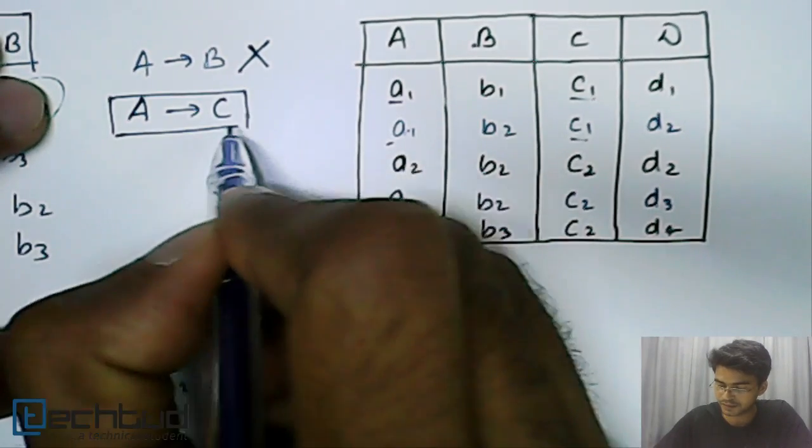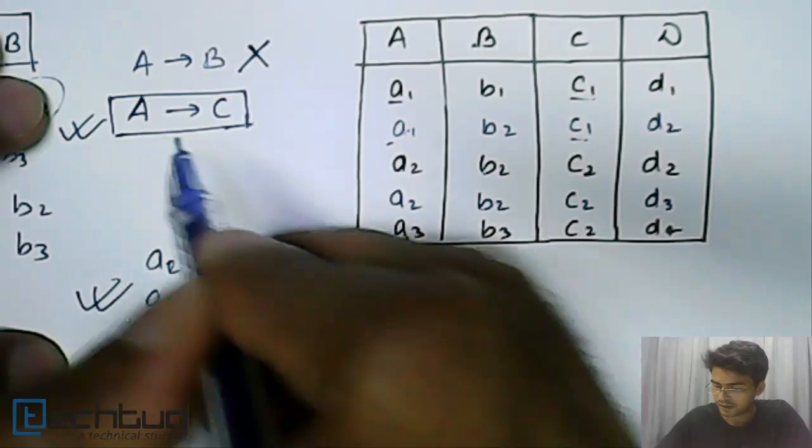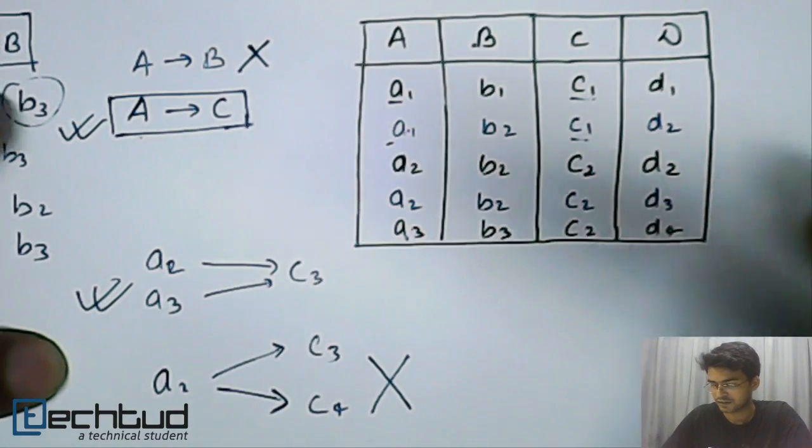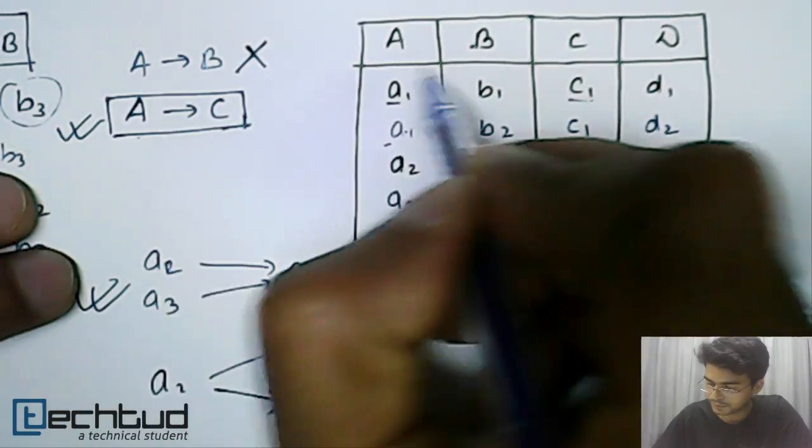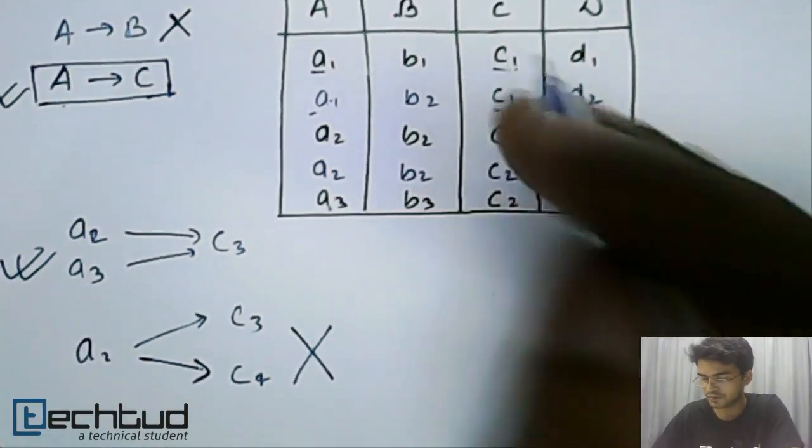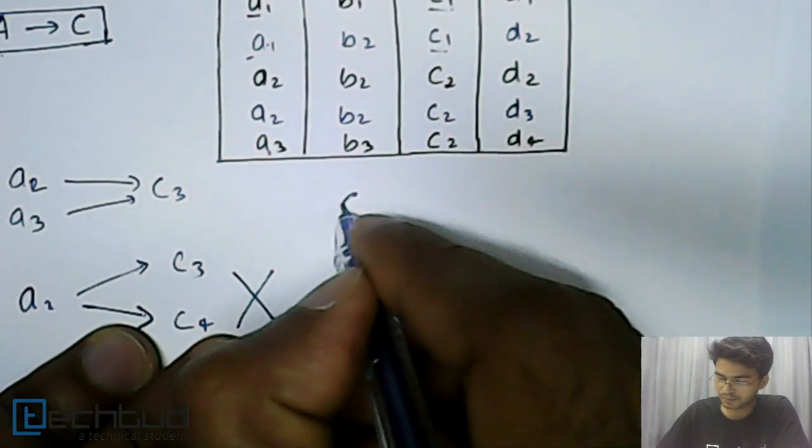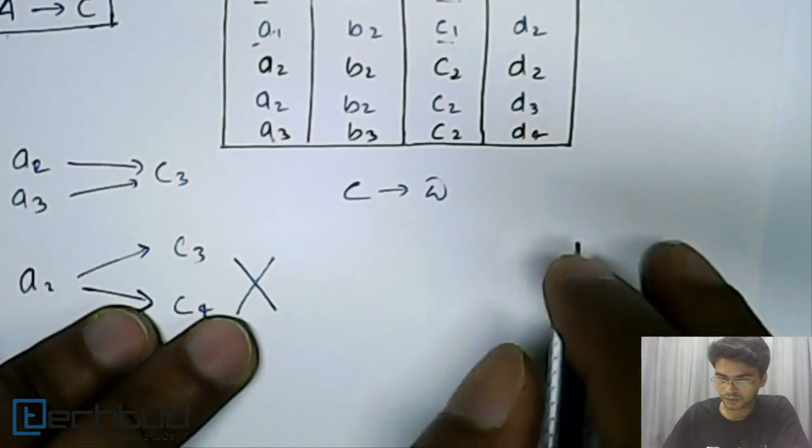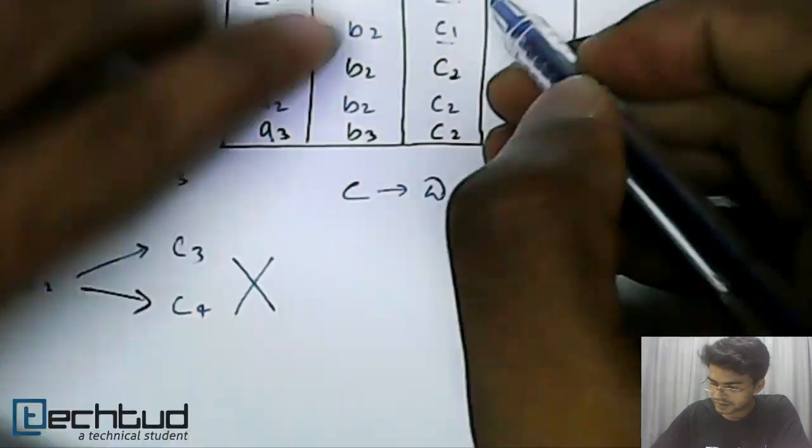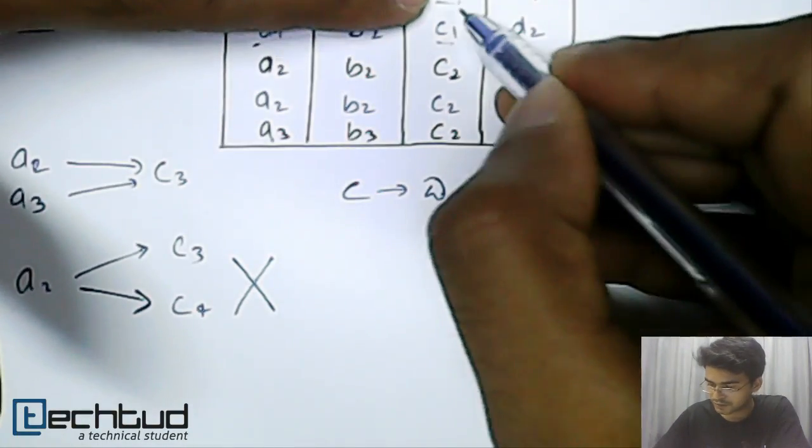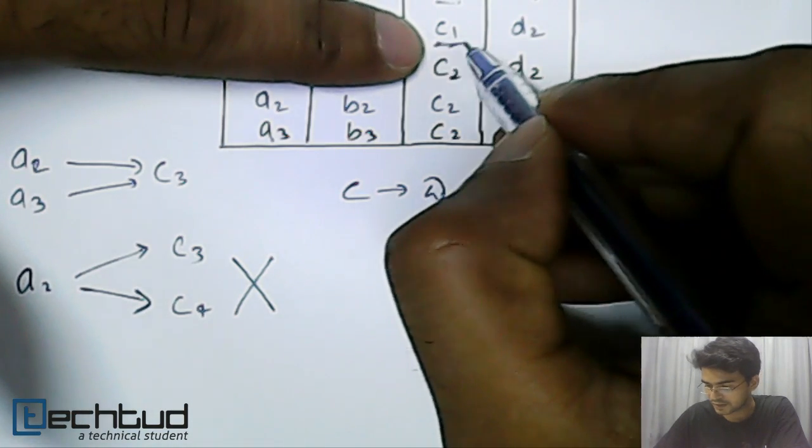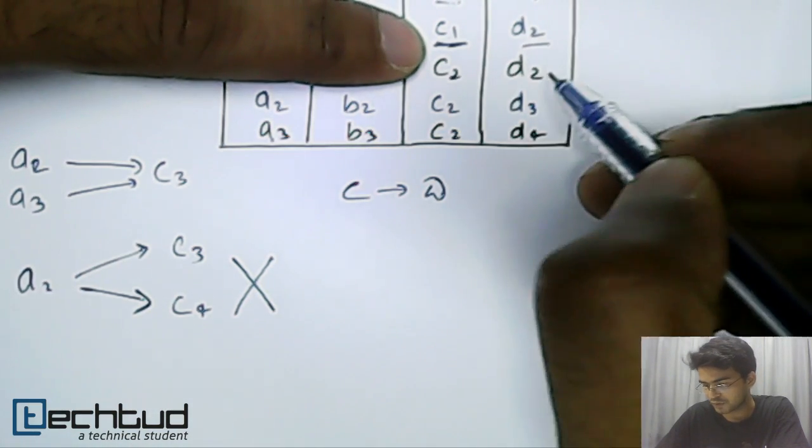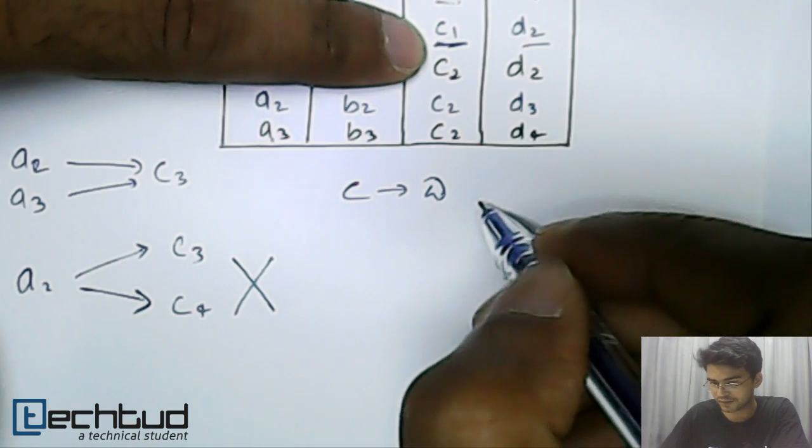We cannot discard this, so in this table we have this functional dependency. A determines C is correct. Now we will do some random possibilities and check for it. Let's say C implies D. So again, c₁ corresponds to d₁, but here the same c₁ corresponds to d₂.